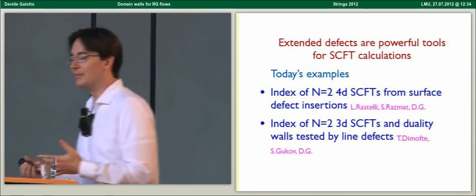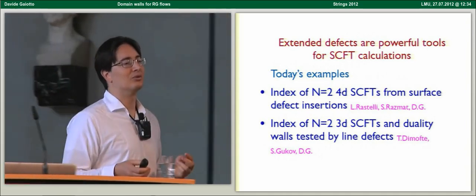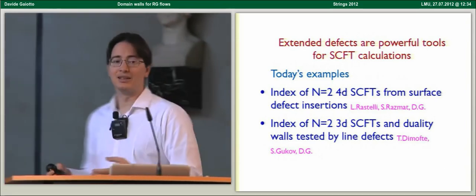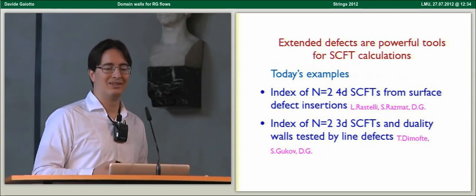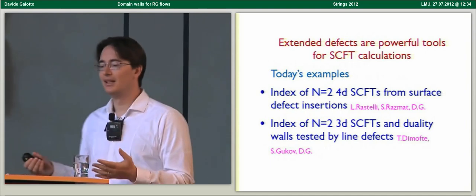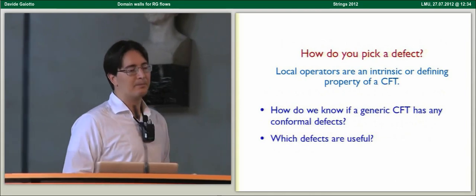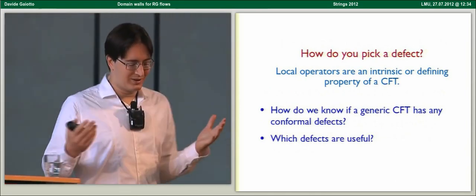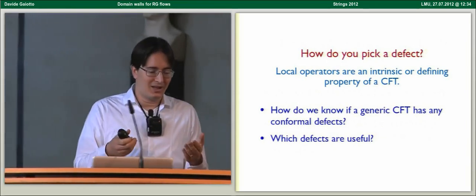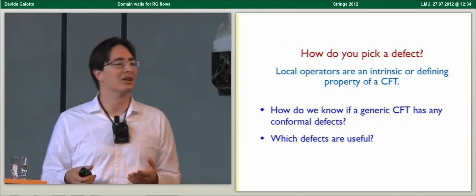Today, for example, you'll hear how surface defects in four-dimensional N=4 gauge theories can be used to compute the superconformal index, even for theories without a Lagrangian. You might hear about the index of three-dimensional conformal field theories as well, and how line defects can be used to control the properties of this index. These examples make one wonder how many other interesting applications of defects in conformal field theories are there waiting to be uncovered.